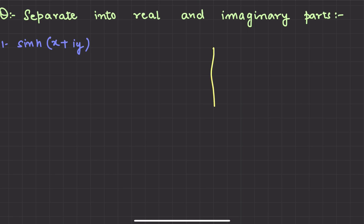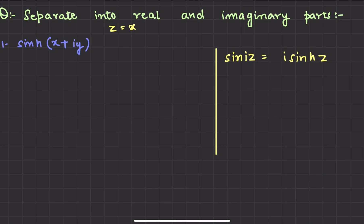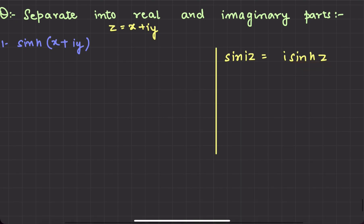First of all, you have studied this formula: sin(iz). What is the value of sin(iz)? It is i·sinh(z). And the value of z is x + iy, because z is a complex number. Now let's use it here — we have sinh(z) here, but there is an iota present.